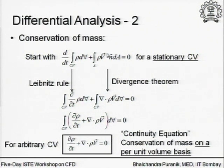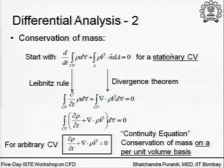Let us start with the conservation of mass statement where the very first line is the integral form exactly as written earlier. We are now going to talk about only stationary control volume, as this is the most common utility. With stationary control volumes, you can do some manipulations without getting into too much trouble. There are two such manipulations: application of the Leibniz rule, and application of the divergence theorem. How many of you have seen these two terms — the Leibniz rule and the divergence theorem?